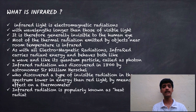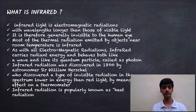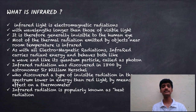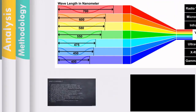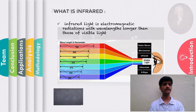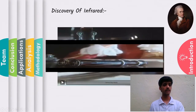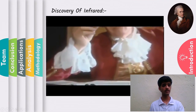Sir William Herschel discovered a type of invisible radiation in the spectrum lower in energy than red light, by means of its effect on a thermometer. Infrared radiation is popularly known as heat radiation. In 1781, the first new planet was discovered in the modern era by Herschel, but he made another remarkable discovery in 1800.